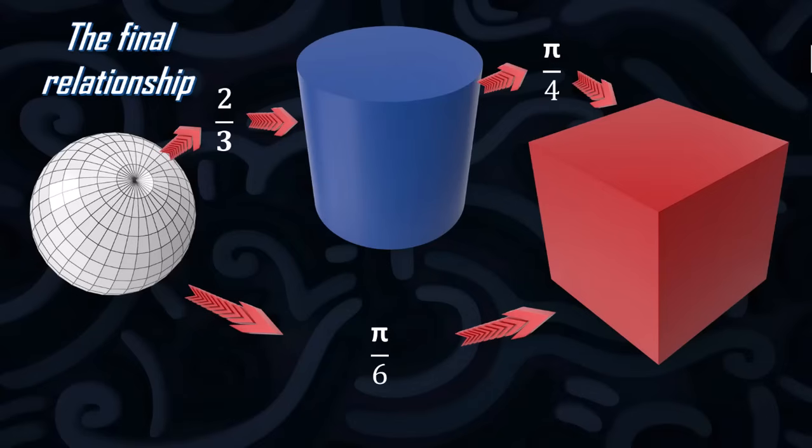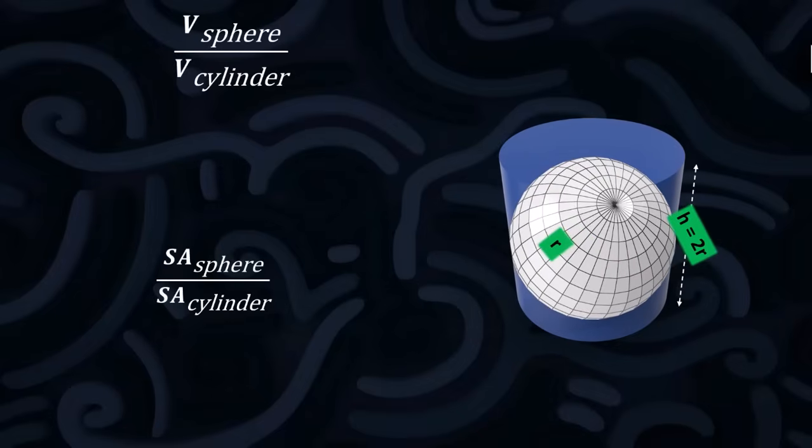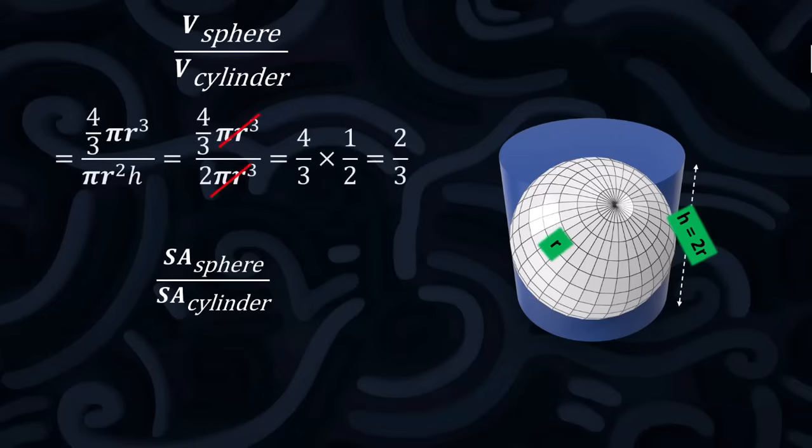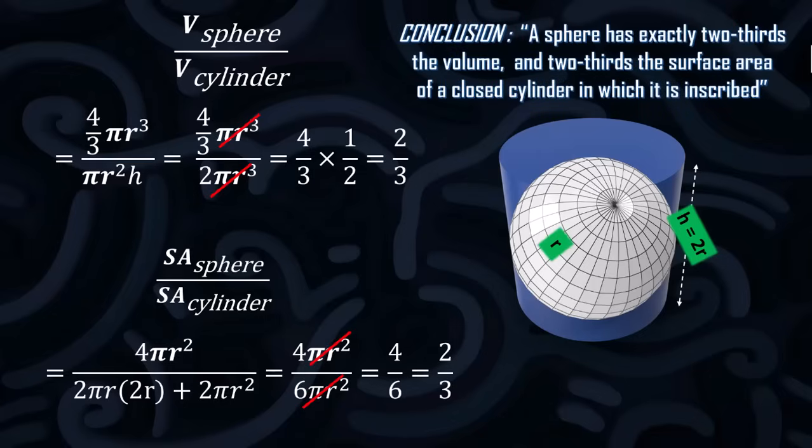All that remains is to do the proofs. Now these are pretty straightforward, because the radius of the sphere will be R, so the radius of the cylinder will be R, its height will be 2R, and the side of the cube will be also 2R. So let's firstly compare the sphere and the cylinder, and by some straightforward algebra, it's 2 over 3. Now the surface area of the sphere and the cylinder. After some algebra, it's also 2 over 3. A sphere has exactly two-thirds the volume, and two-thirds the surface area of the closed cylinder in which it is inscribed.